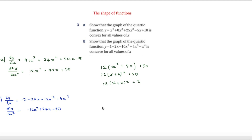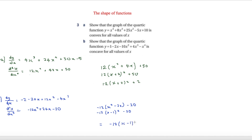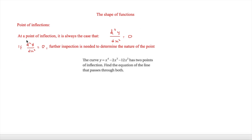We take out −12 from d²y/dx² = −12x² + 24x − 20, giving −12(x² − 2x) − 20. Completing the square: −12(x − 1)² + 12 − 20 = −12(x − 1)² − 8. This is less than zero for all values of x because we have −12 multiplied by something always non-negative, and then minus 8 at the end.